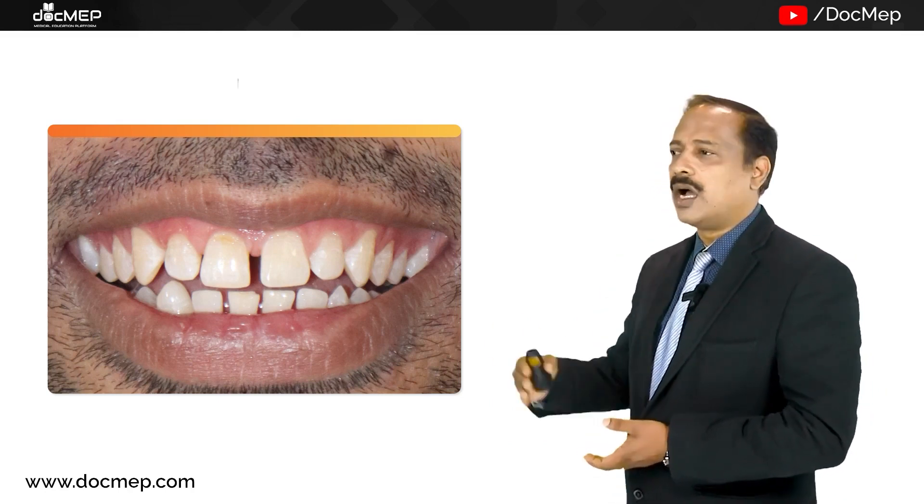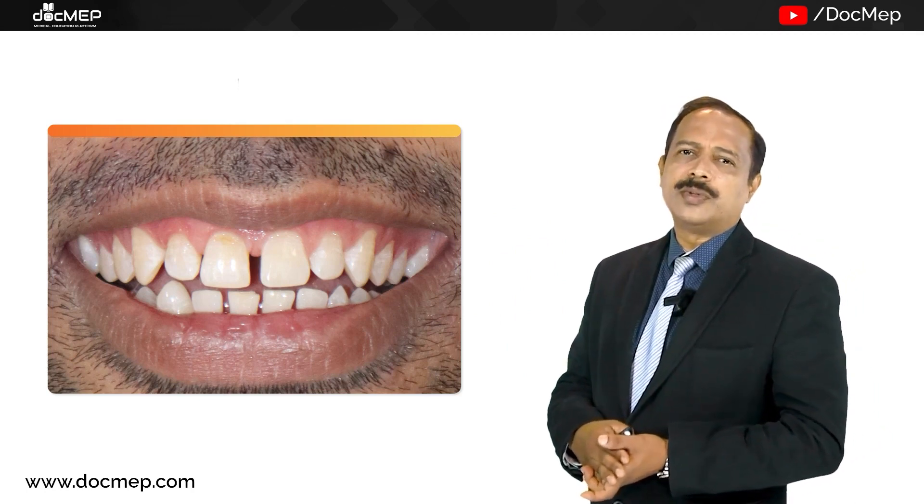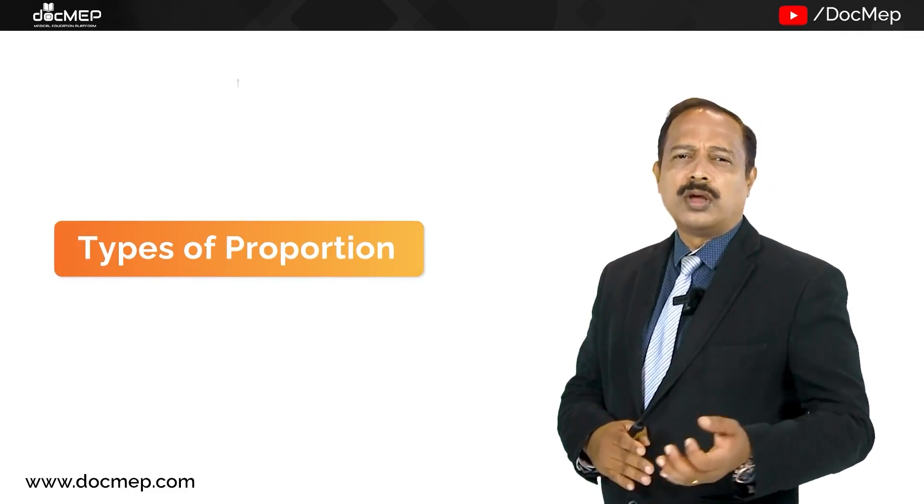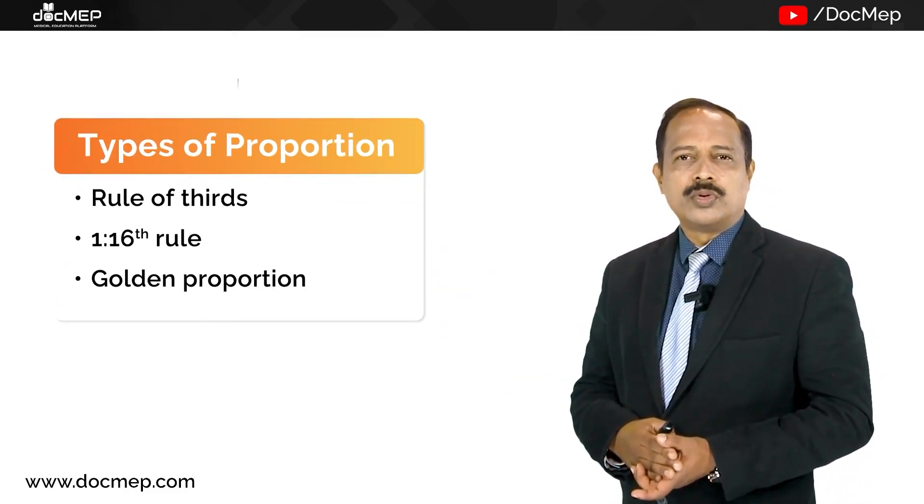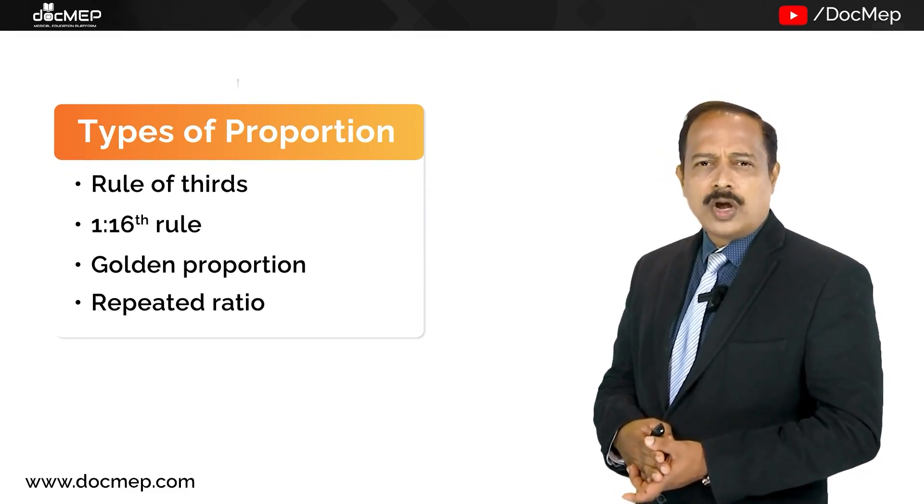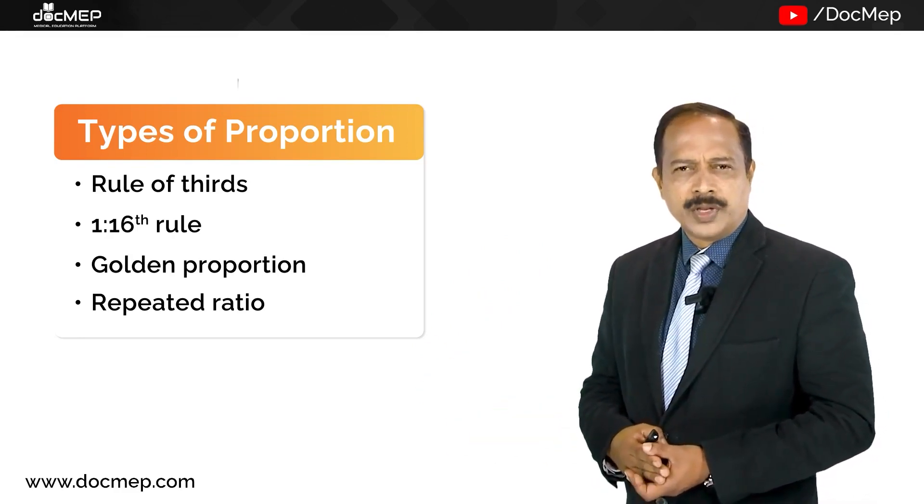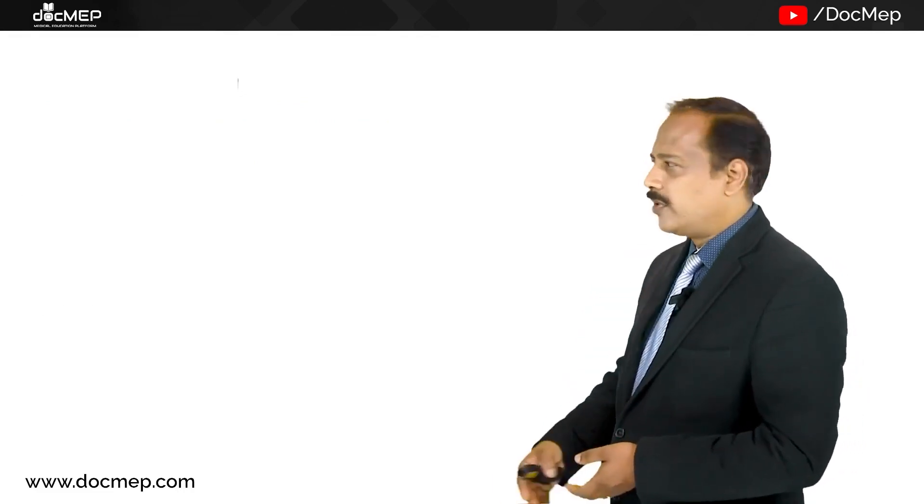And this is how we are going to utilize the proportions. But we have always been taught a lot of proportions, types of proportions like rule of thirds and one sixteenth rule and golden proportion and repeated ratio and so on. We will discuss the advantage and disadvantage of these and how to utilize them in clinical practice.